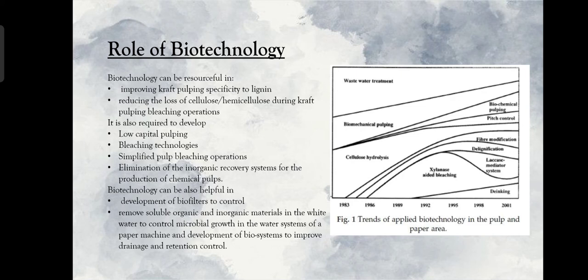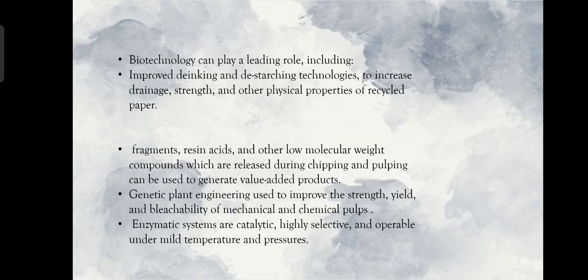Biotechnology can be resourceful in improving kraft pulping specificity to lignin, reducing the loss of cellulose or hemicellulose during kraft pulping and bleaching operations. It is also required to develop low-capital pulping and bleaching technologies, simplified pulp bleaching operations, and elimination of inorganic recovery systems for the production of chemical pulp. Biotechnology can also be helpful in the development of bio-filters to control and remove soluble organic and inorganic materials in the white water, to control microbial growth in the water systems of a paper machine, and to develop biosystems to improve drainage and retention control.